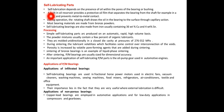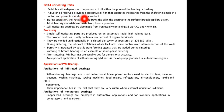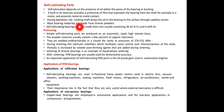Self-lubricating parts depend on the presence of oil within the pores of the bearings or bushings. A built-in oil reservoir provides a protective oil film that separates the bearings from the shaft, as in a motor, and prevents metal-to-metal contact — it avoids friction. During operation, the rotating shaft draws the oil in the bearings to the surface through capillary action.